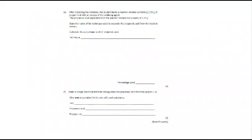Moving on to parts E and F. We've corrected the mistakes. The student heats a reaction mixture containing 6.5 grams of propan-1-ol with an excess of the oxidizing agent. The propanoic acid that we got in the end was 3.25 grams. What technique would we use to separate propanoic acid from the reaction mixture? That's fractional distillation.